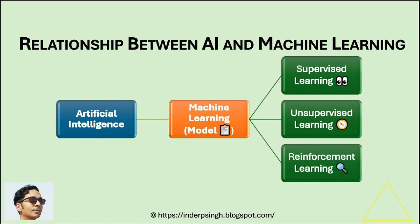Before learning how to use machine learning in software testing, let's get an introduction to machine learning. In machine learning, a model is a program or system that has been trained to make predictions or decisions based on data. You may think of the model like a recipe to cook a dish after learning from many examples of that dish being made.